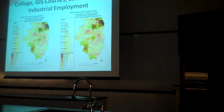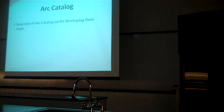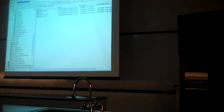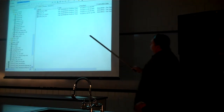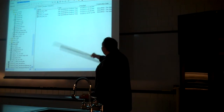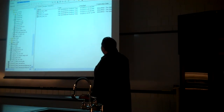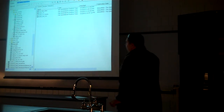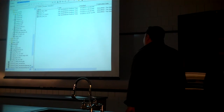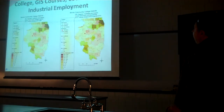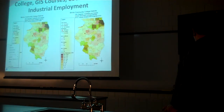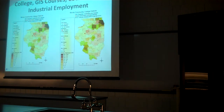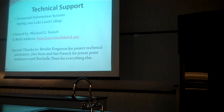This map was for industrial jobs. This is a snapshot of my ArcCatalog that I used. On the left it shows my geodatabase and some of the feature classes I added to it.